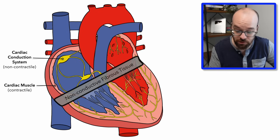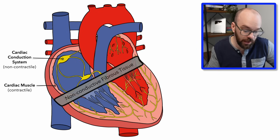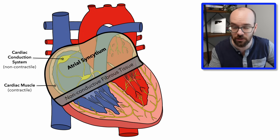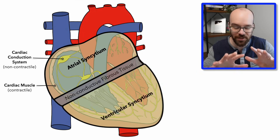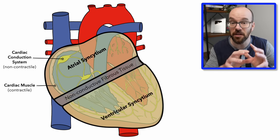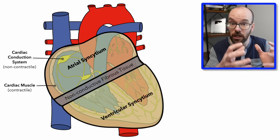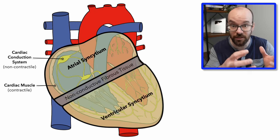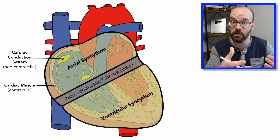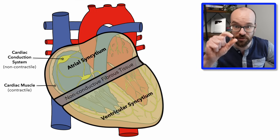That fibrous connective tissue separates the atria from the ventricles into two sections: the atrial syncytium and the ventricular syncytium. A syncytium is a group of cells that are all electrically connected to each other. All the cardiac muscle in the atrial syncytium is electrically connected, meaning if one cell depolarizes it depolarizes the next cardiac muscle cell.